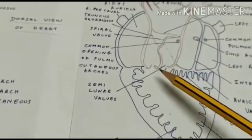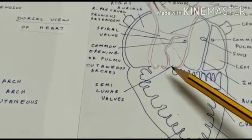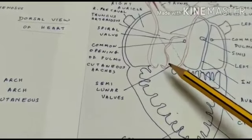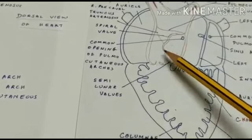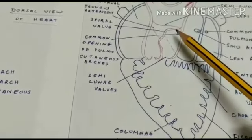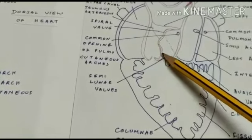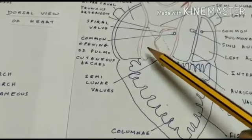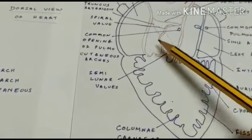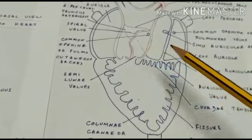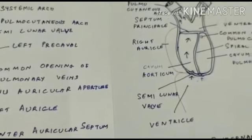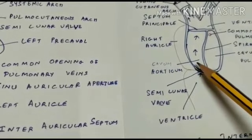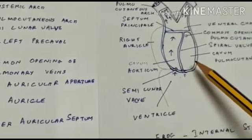The pylangium is also referred to as the conus arteriosus, and the synangium is referred to as the bulbus arteriosus. Internally, the pylangium is divided into two unequal portions by a spiral valve, which is a longitudinal groove. This spiral valve divides the pylangium into two parts: the cavum aorticum and the cavum pulmo-cutaneum.